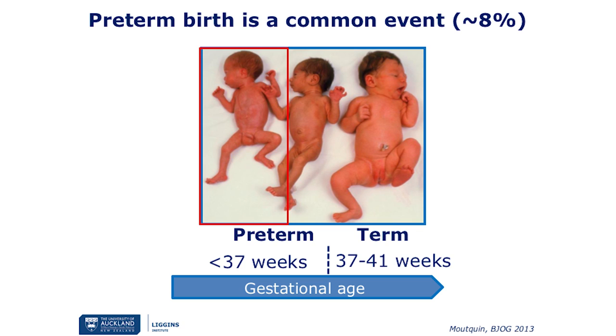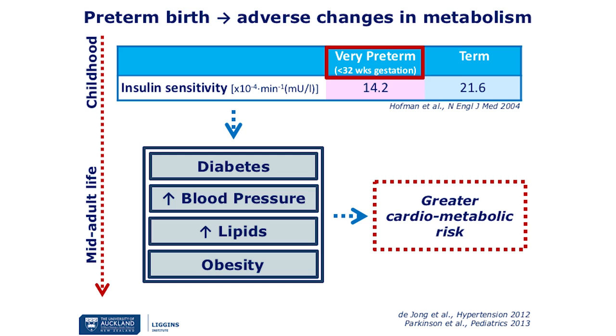Preterm birth is a common event and preterm babies are those born at less than 37 weeks of gestational age. In our research, we mainly focus on children who are born at less than 32 weeks of gestational age — they are the children born very preterm. These children have a higher risk for the development of adverse metabolic profiles.